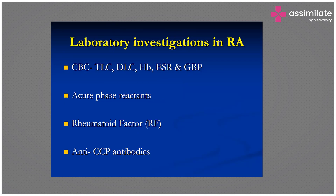Coming to the lab investigations: as I mentioned, for neutropenia you need to do a CBC, TLC, DLC, check for Hb, ESR, and GBP. What is GBP? What do you understand by GBP?